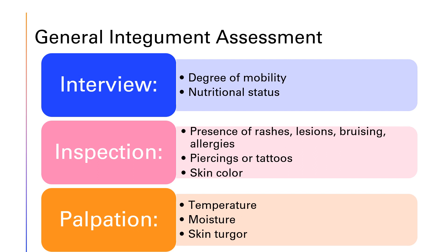Next, we need to palpate the skin, assessing the temperature of the body parts and making sure the temperature is the same on both sides — meaning both hands are equally warm, both feet are equally warm. We also palpate for any moisture on the skin; your skin should be warm and dry. We also assess skin turgor on the forearm or under the clavicle. Normal skin turgor means that if we gently pinch the skin, it bounces back to its normal flat location.